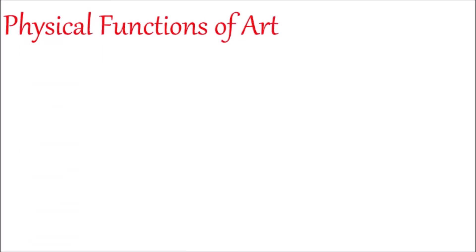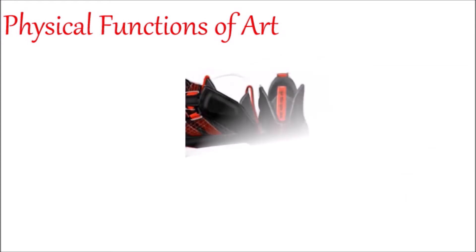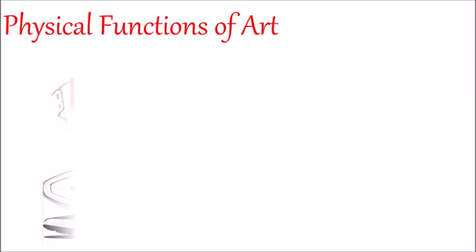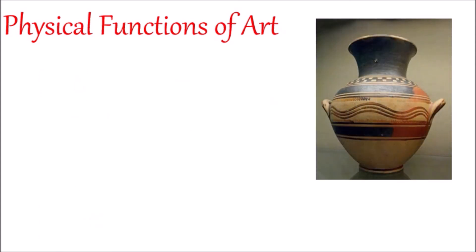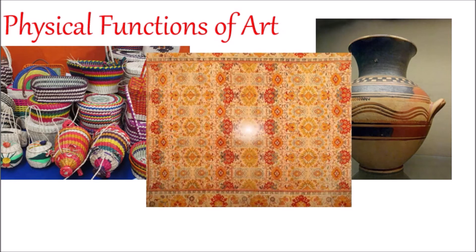Physical functions of art refer to artworks that serve a useful purpose. In modern times, a car design or tennis shoe line are examples of artwork that serve a particular function, but we purchase them for how they look and how they align to our aesthetic. Examples include a Greek urn used to carry water, Mexican baskets that held food and decorative items, and a Turkish rug that was hand-woven and designed by an artist.